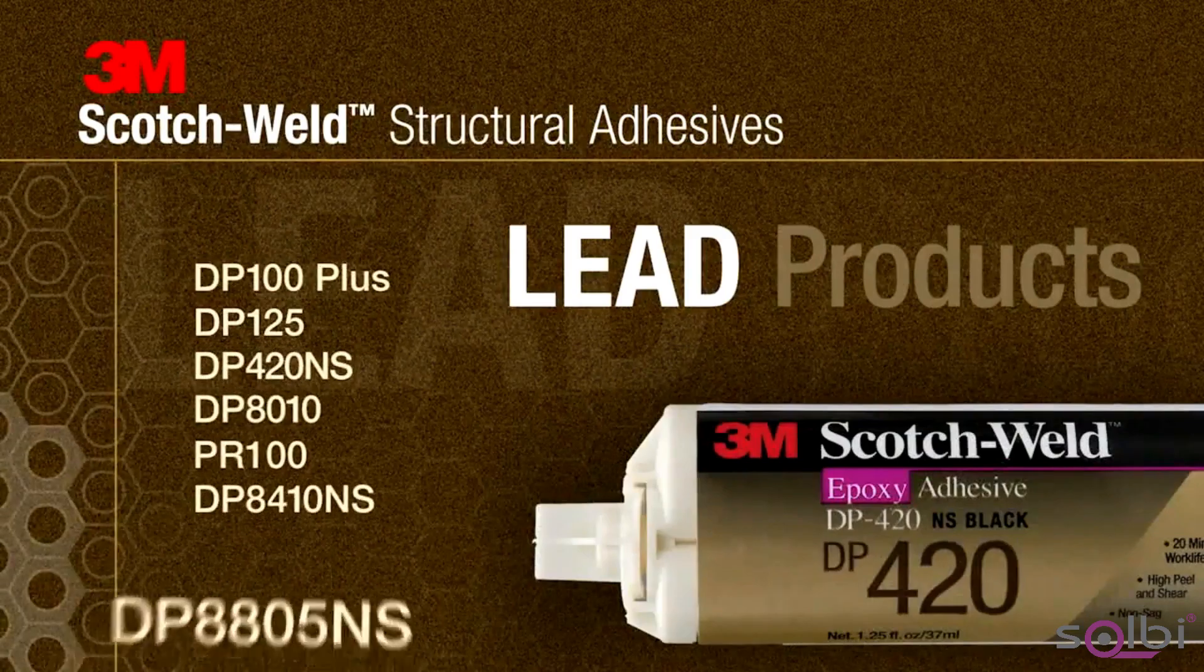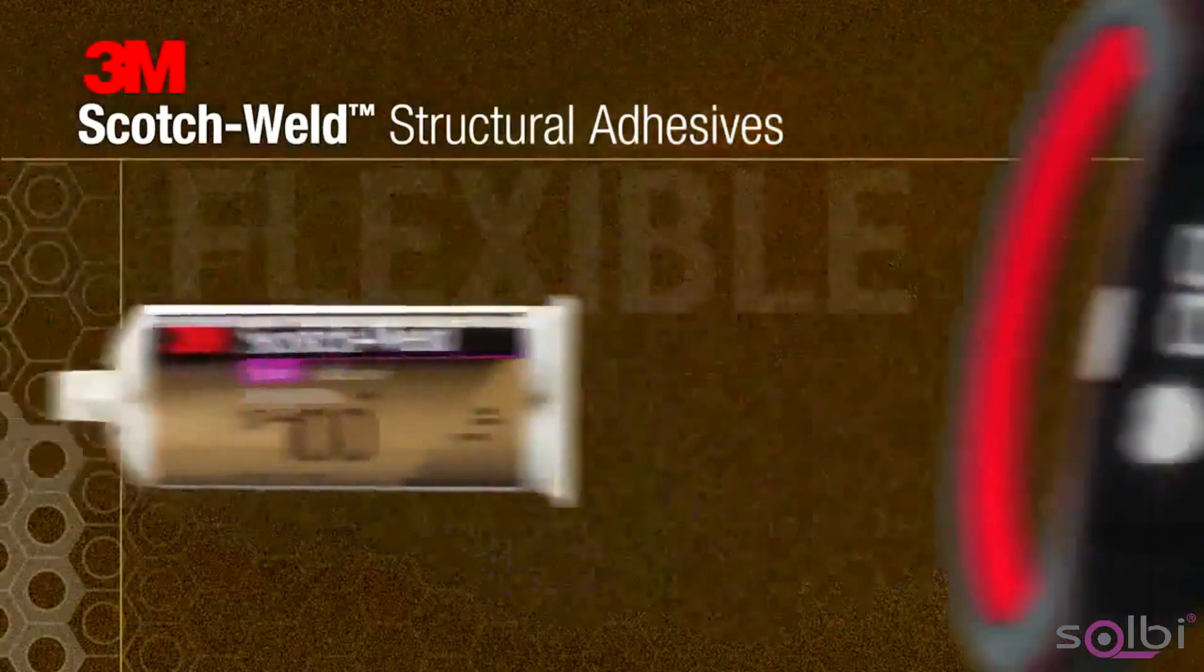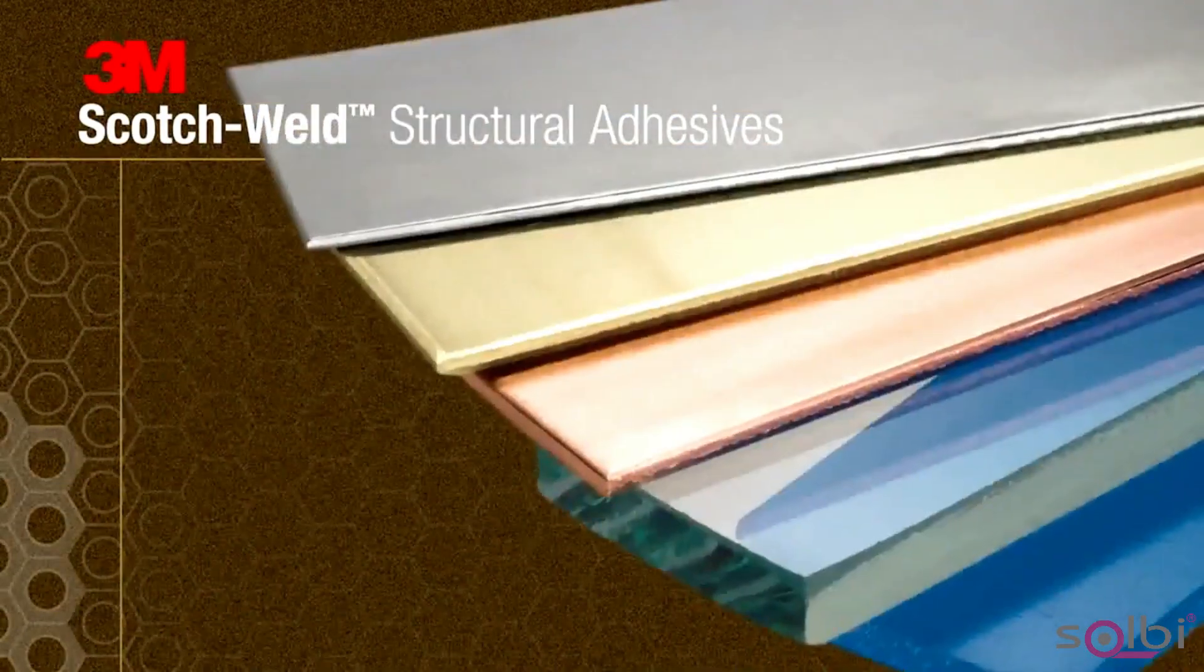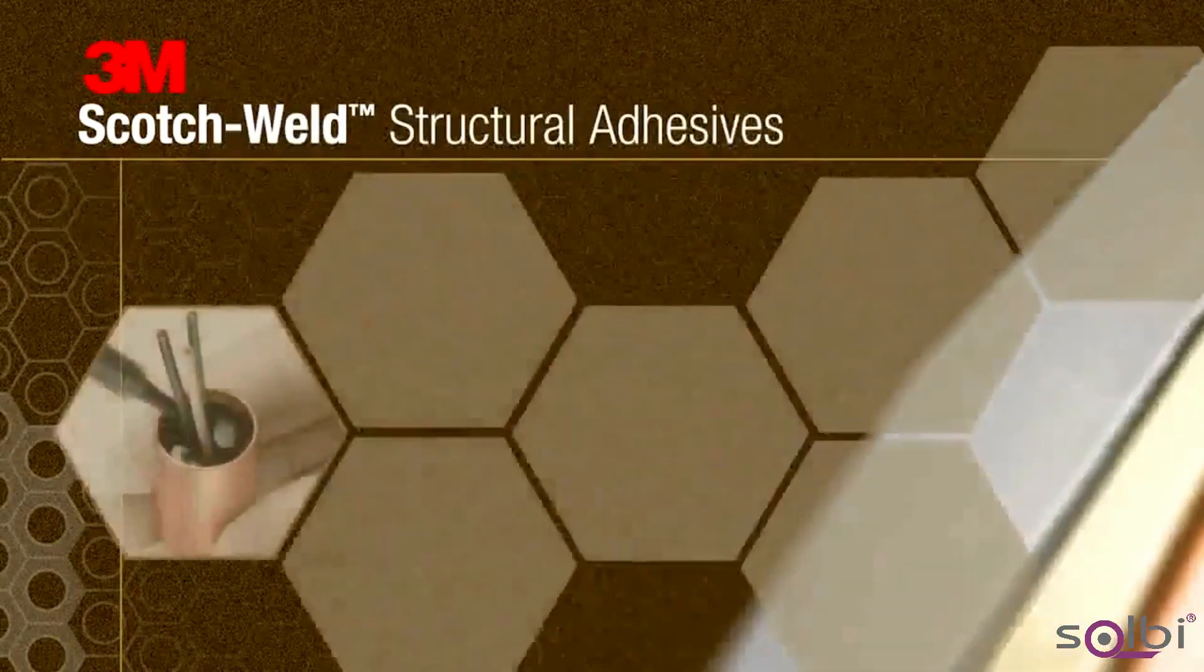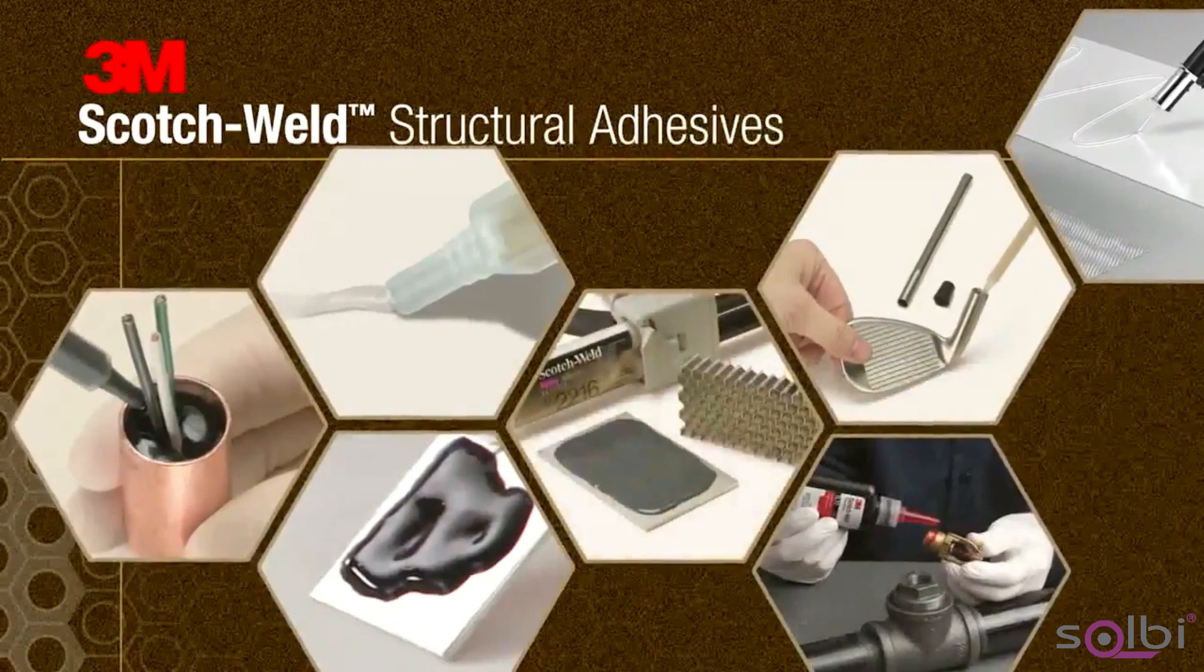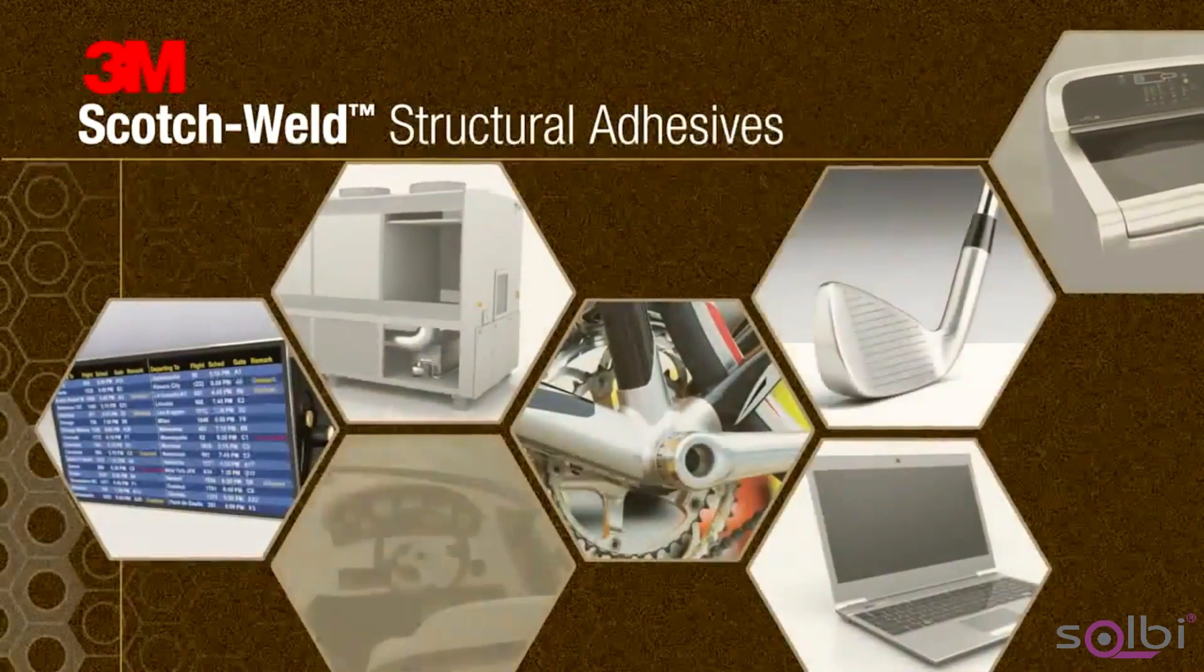3M Scotch Weld Structural Adhesives are premium performance products ranging from highly flexible to high strength bonds, providing superior plastic to metal bonding. With a variety of options from instant bonding to long open times for more complex parts, you can design with confidence and build to last.